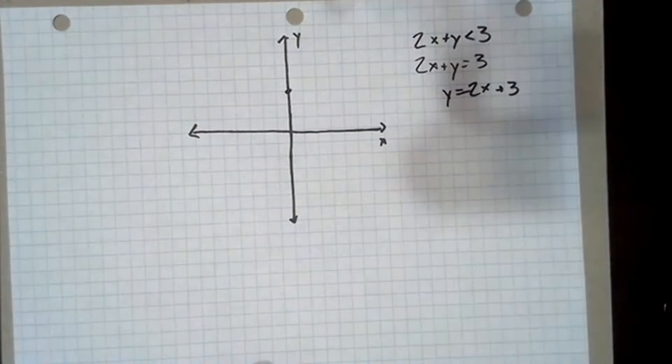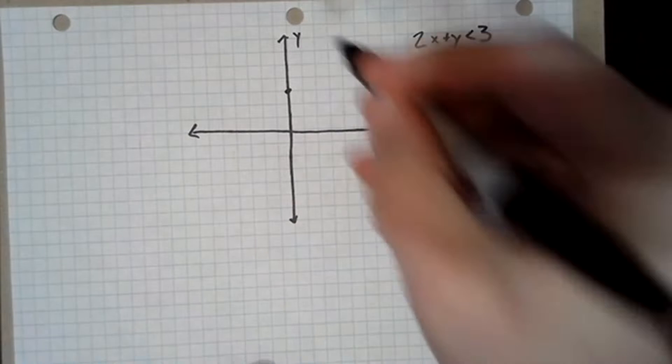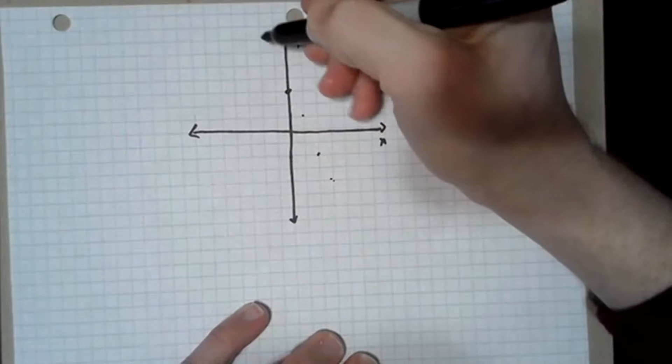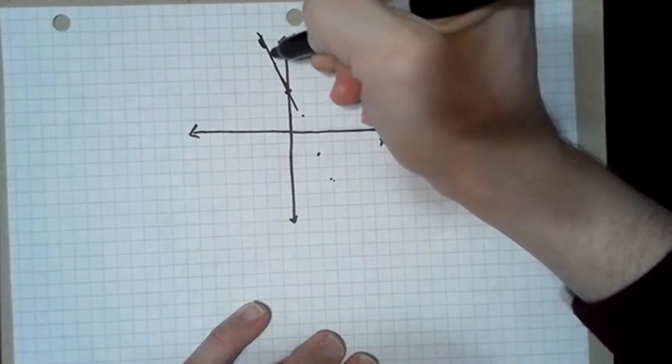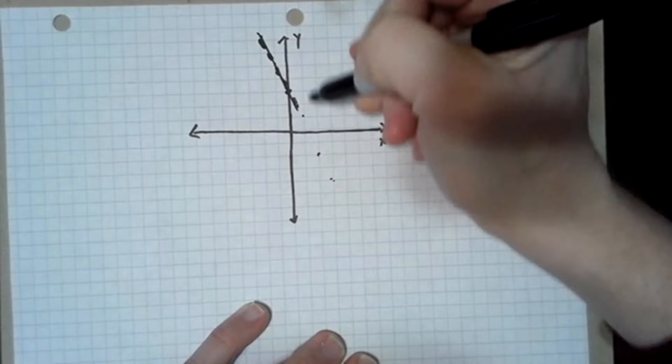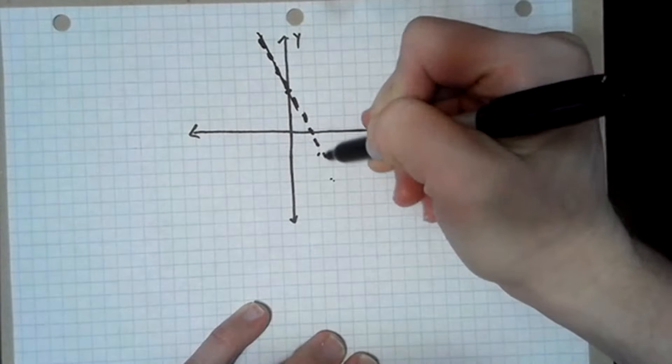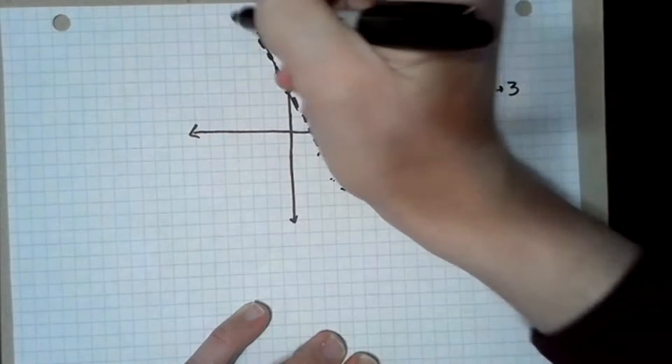But here is our y-intercept, zero, three. And then I've got a few more points I can put on that line. And then I'll just sketch. Actually, I should be sketching a dashed line, not a solid line. So pretend that the stuff to the left is dashed. That's good enough.